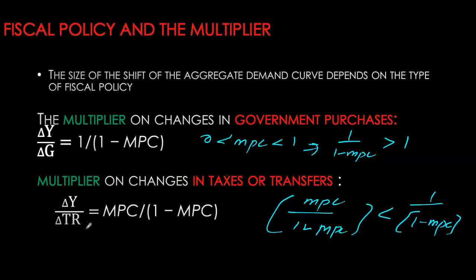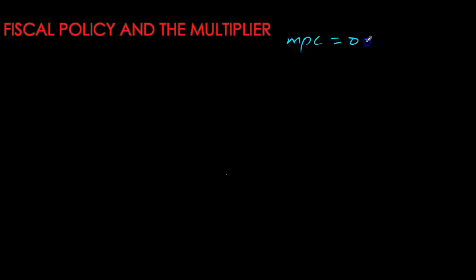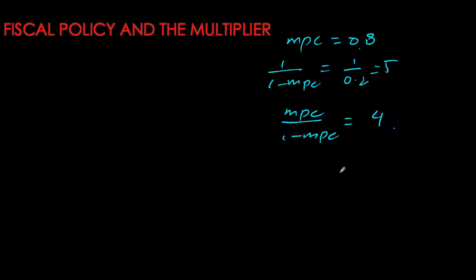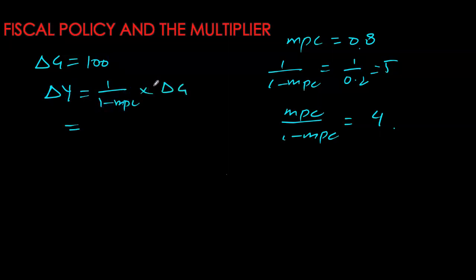A dollar change in transfers causes real GDP to change by MPC over (1 minus MPC). Let's do an example to compare the effect of government spending versus transfers on real GDP. If MPC is 0.8, the government spending multiplier is 5, and the tax or transfer multiplier is 4. If we increase government spending by $100 million, overall GDP will change by 5 times $100 million, or $500 billion.